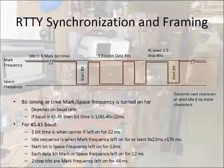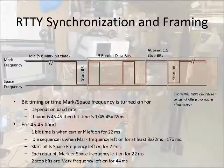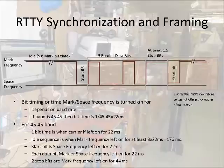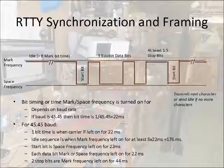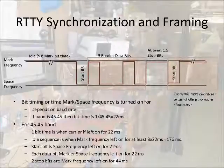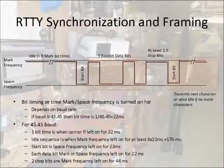In order to understand the transmission of any digital signal, you need to define what the bit time is. In the case of RIDI, it's the time a mark or space frequency must be turned on for. It's basically the time to transmit each bit and it depends on the baud rate. When the baud rate is the same as the bit rate, the bit rate is easy to calculate. For RIDI 45, the bit time is 22 milliseconds.